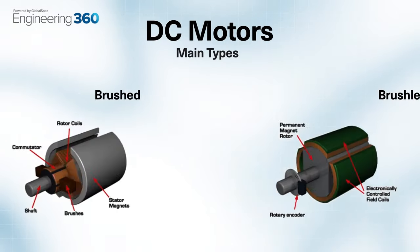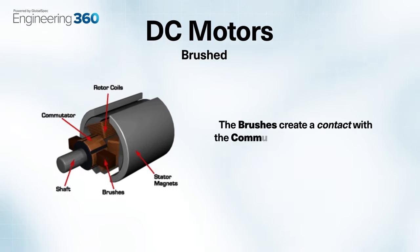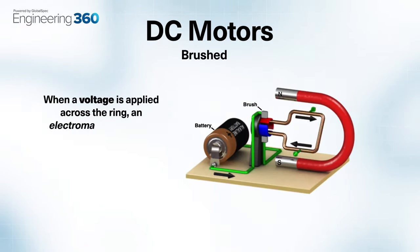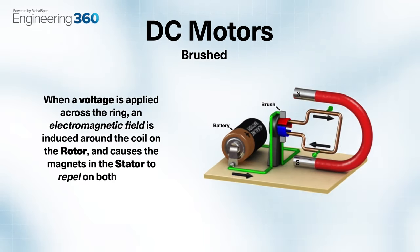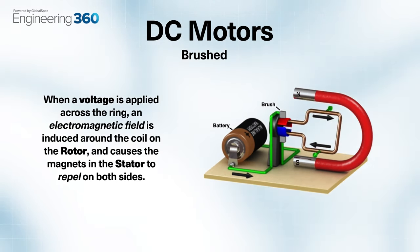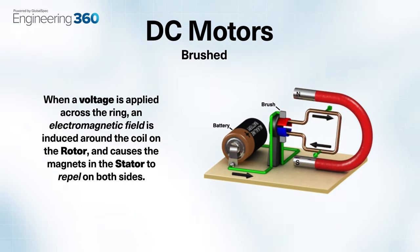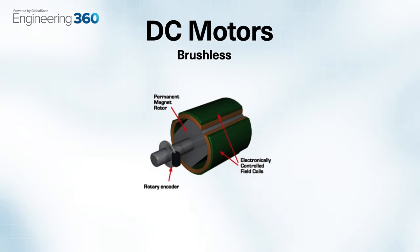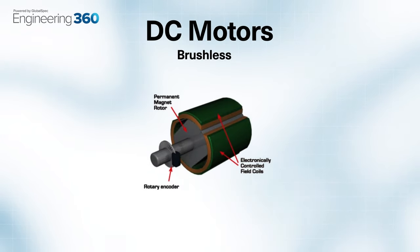The two main types of DC motor are brushed and brushless. Brushed motors get their name from the brushes that create contact with the commutator ring. When a voltage is applied across the ring, an electromagnetic field is induced around the coil on the rotor and causes the magnets in the stator to repel on both sides. This alternating polarity of the magnetic field induces the rotary motion in the motor shaft.